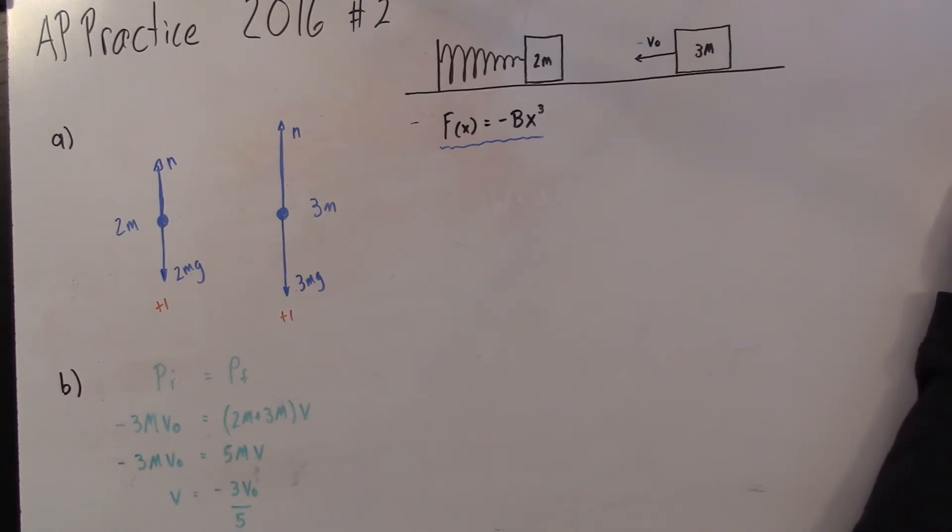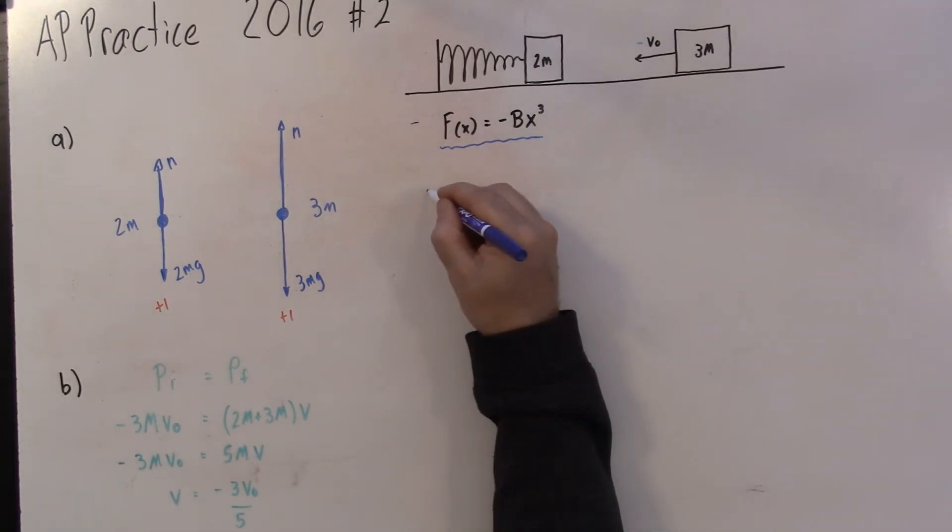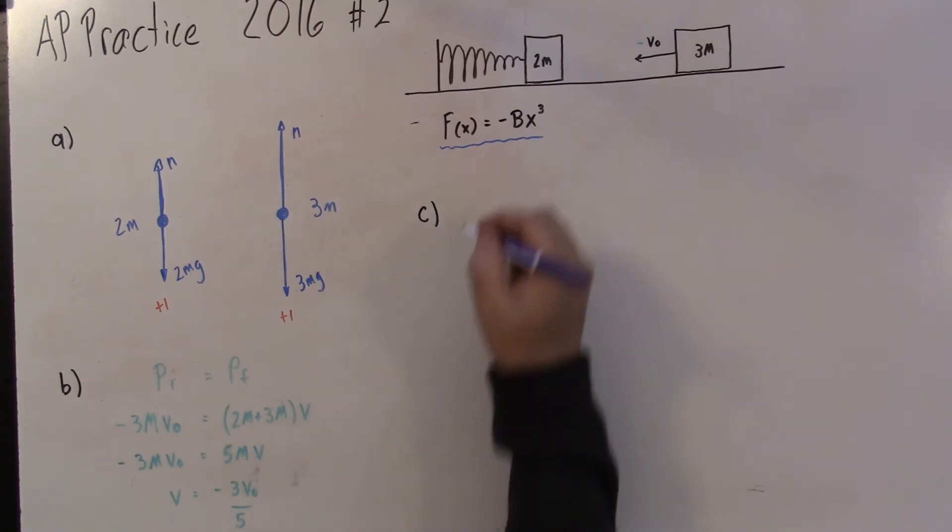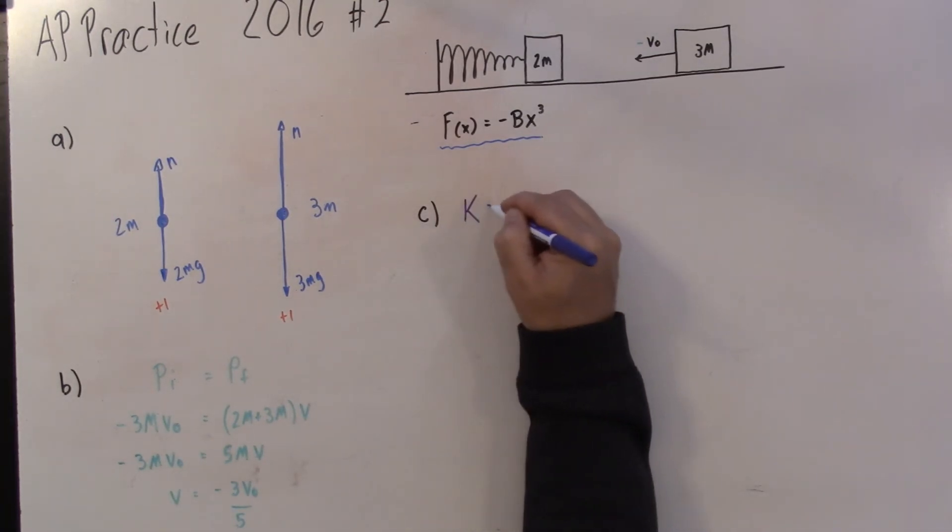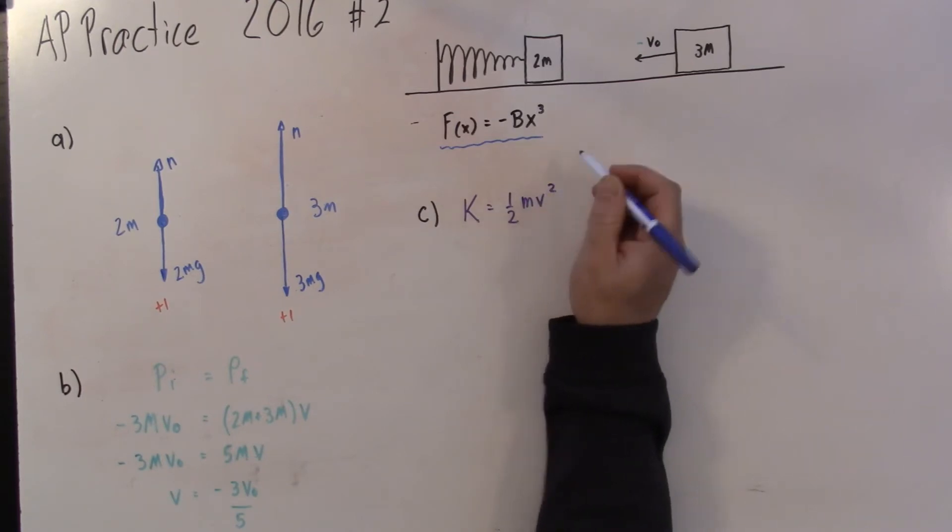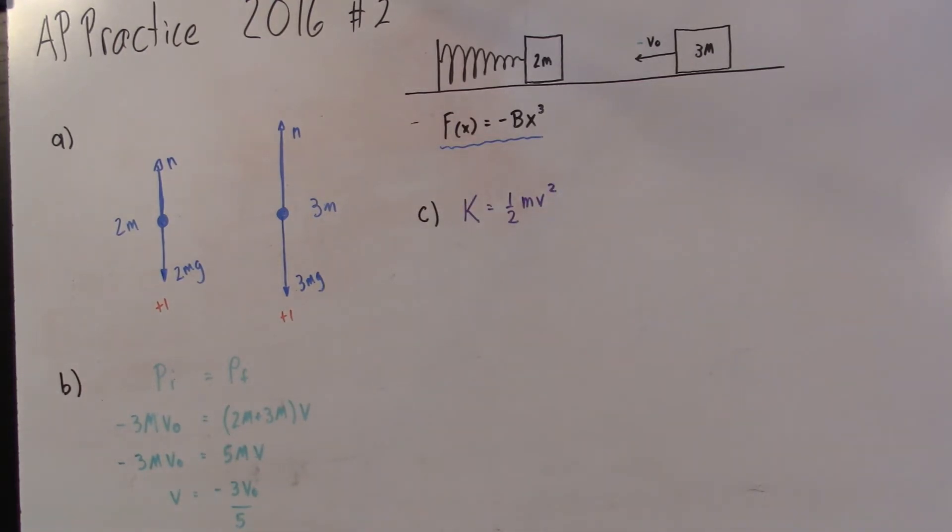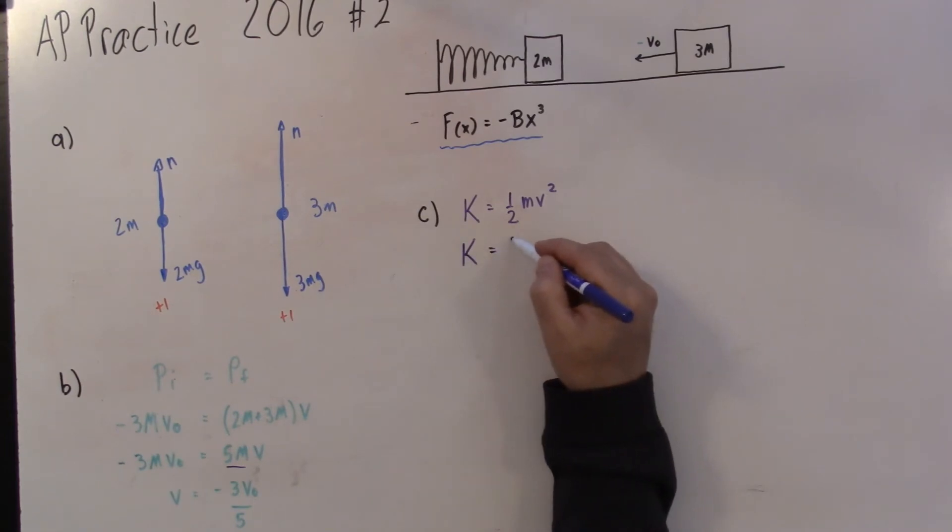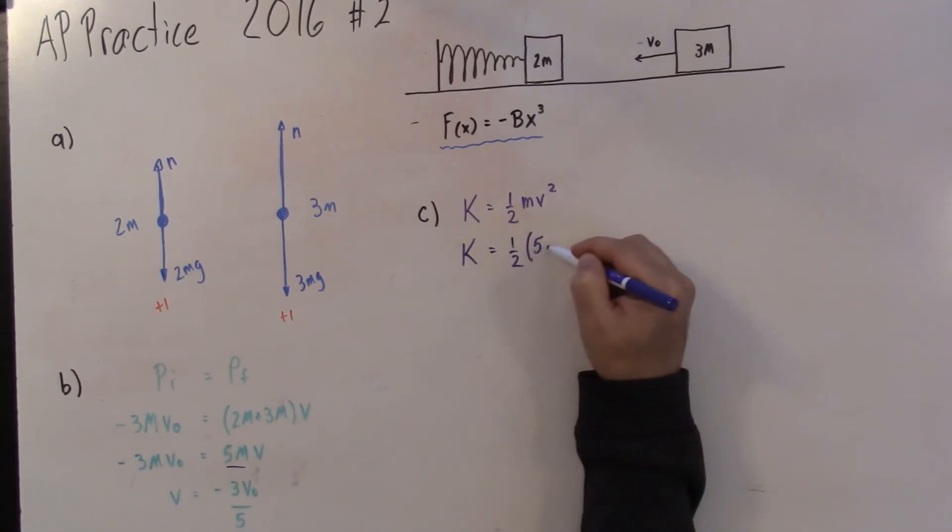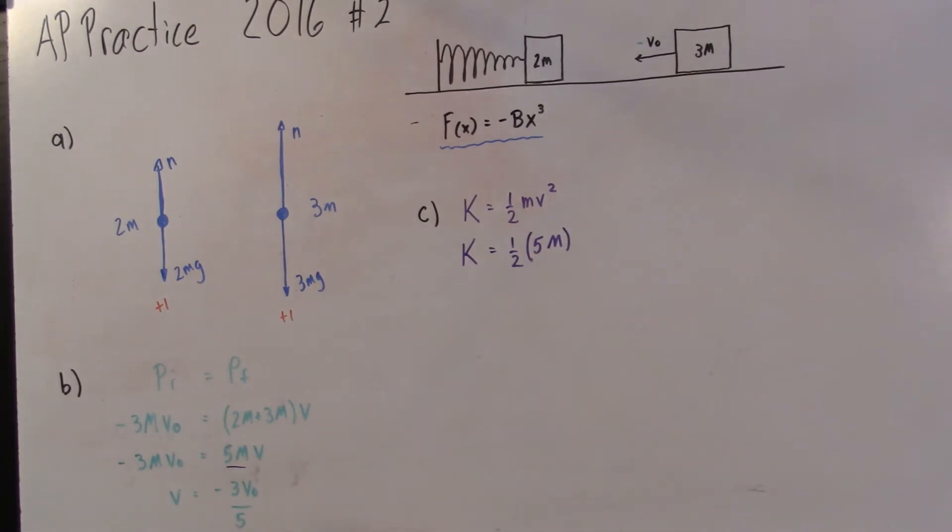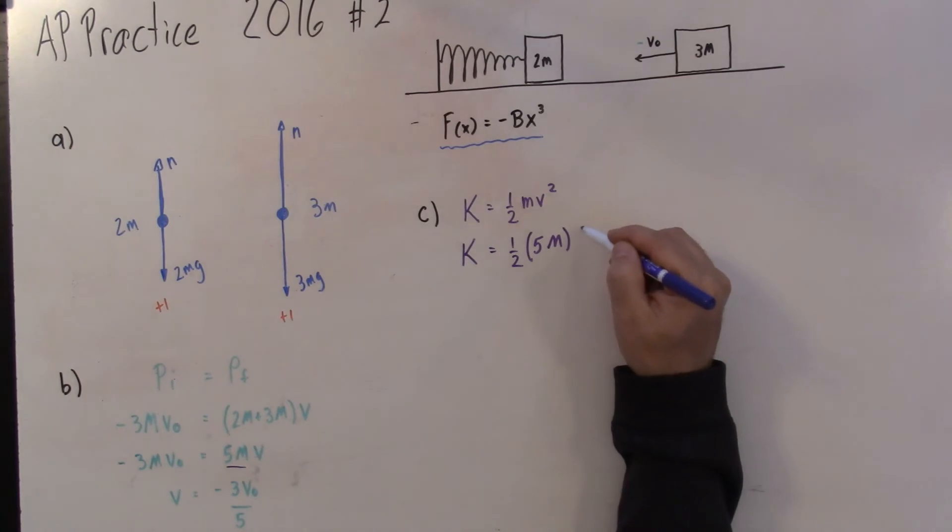Let's look at c. C says derive an expression for the kinetic energy of the 2-block system immediately after the collision. No problem. I know kinetic energy is 1 half m v squared. I take my speed from here, and I know it's a 2-block system with 5m. So kinetic energy equals 1 half 5m times 3v0 over 5 squared.